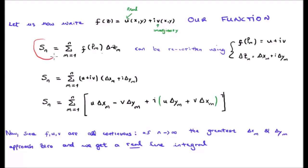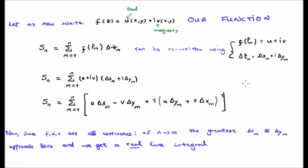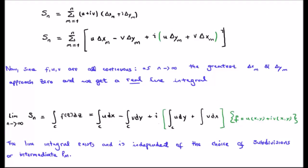We substitute f of z as u plus iv into our sum S_n. Δz is nothing other than Δx_m plus i times Δy_m. Plugging that into S_n and rearranging for real and imaginary components separately gives us the real components and the imaginary components. Since f, u, and v are all continuous, as n approaches infinity the greatest Δx_m and Δy_m approach zero and we get the real line integral. The line integrals exist and are independent of the choice of subdivisions or intermediate points p_m.